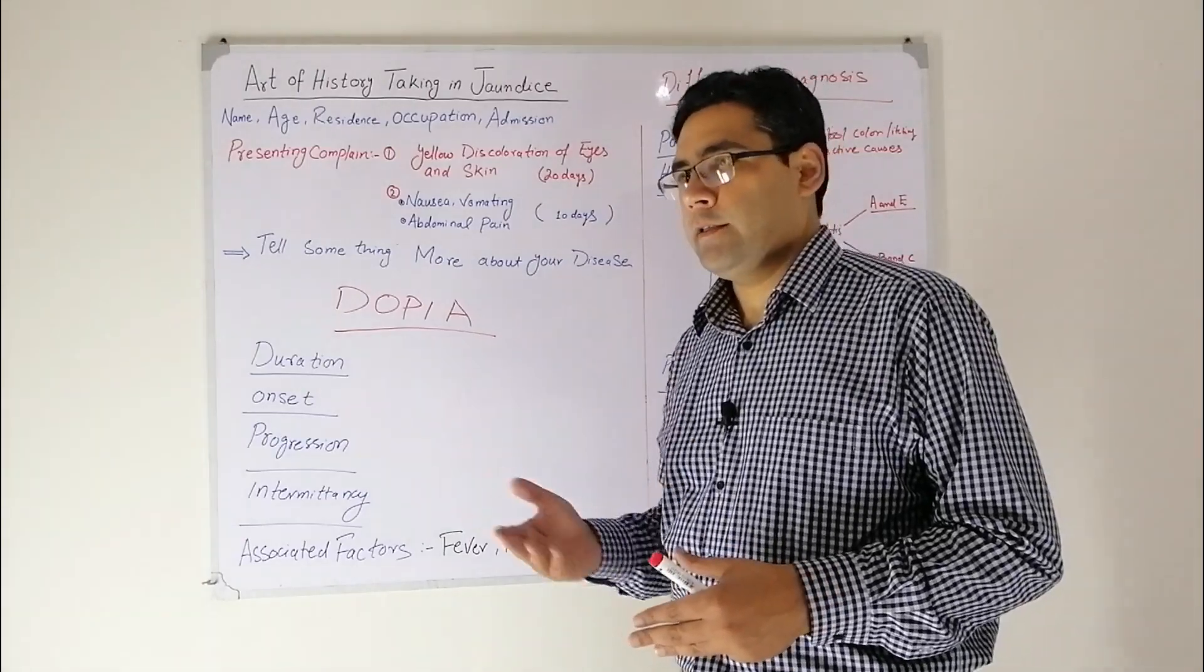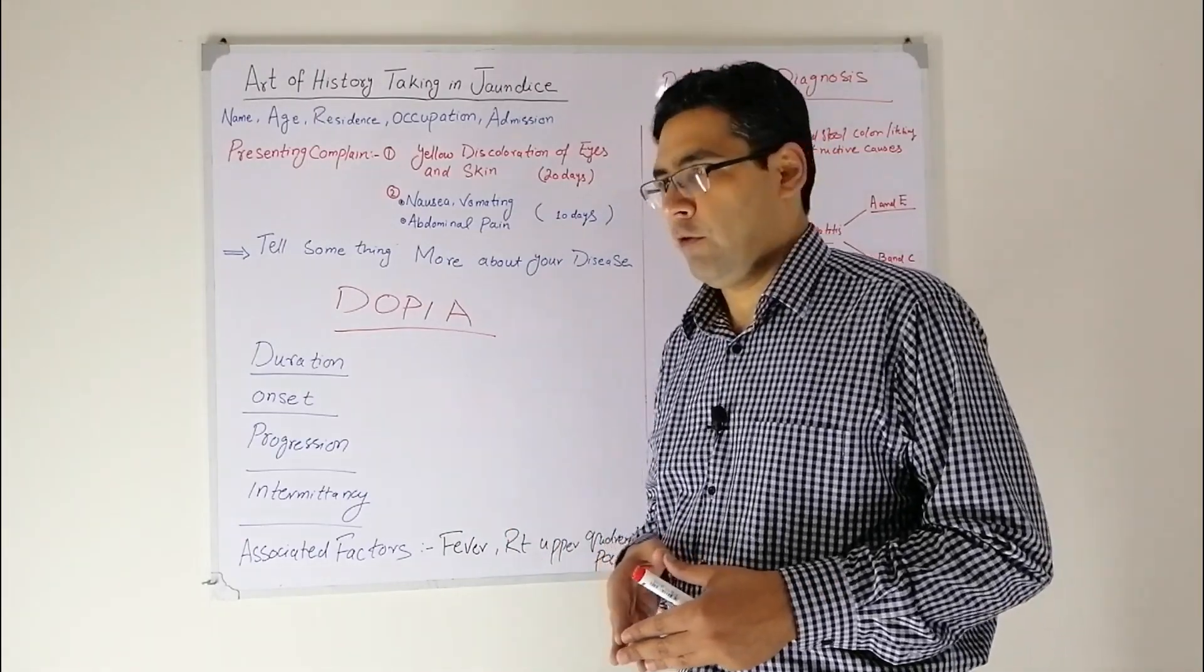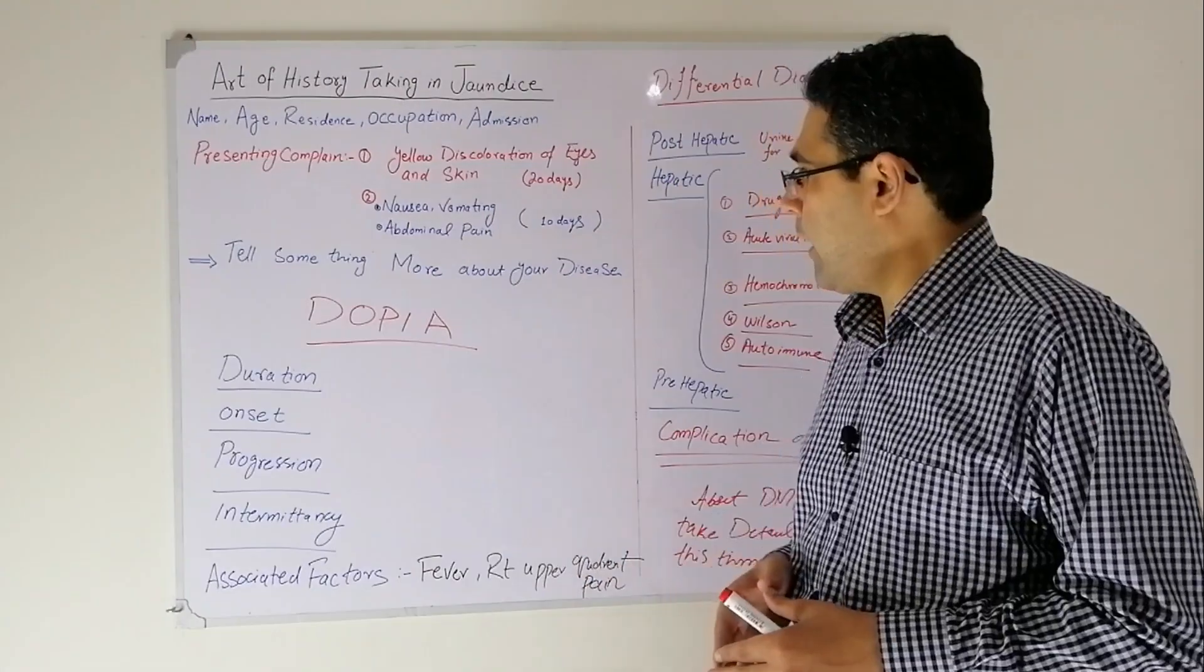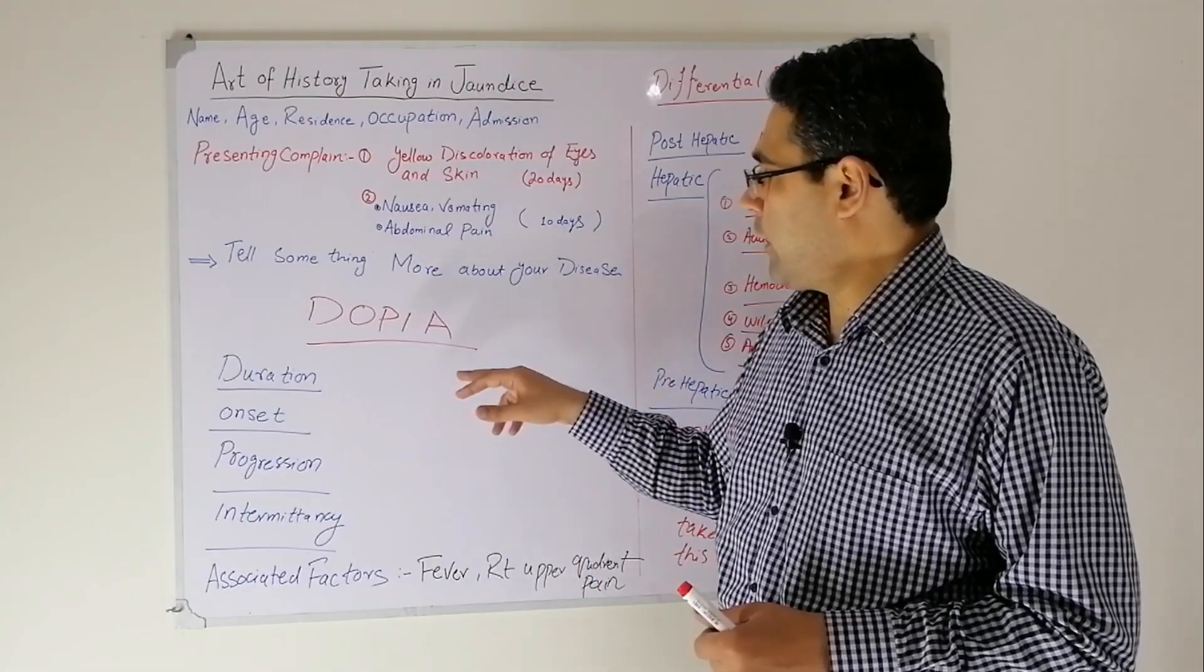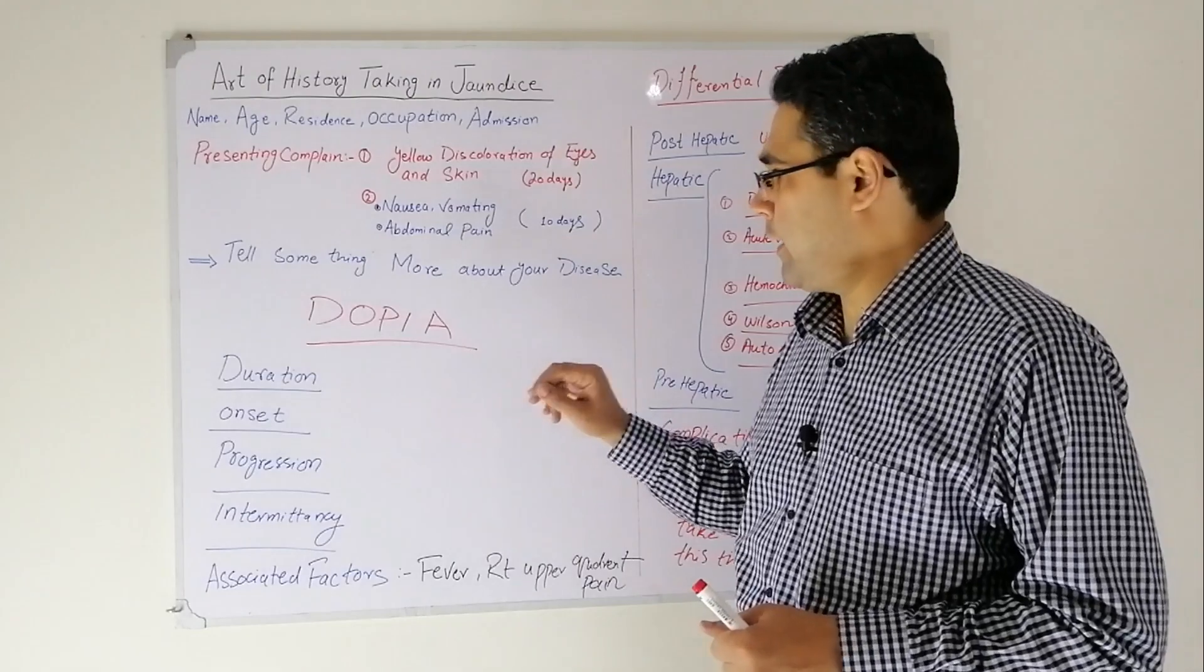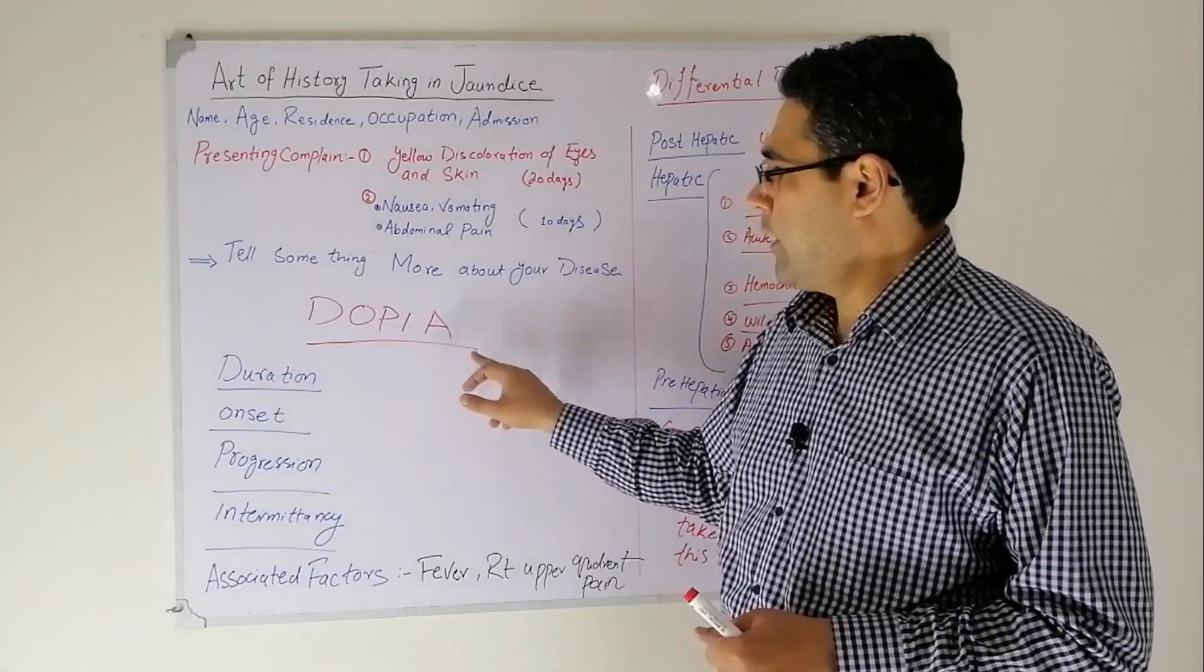At this time, it is possible that he may give you some information that he developed the jaundice about 20 days ago. I suggest you to use this mnemonic for jaundice: D-O-P-I-A.